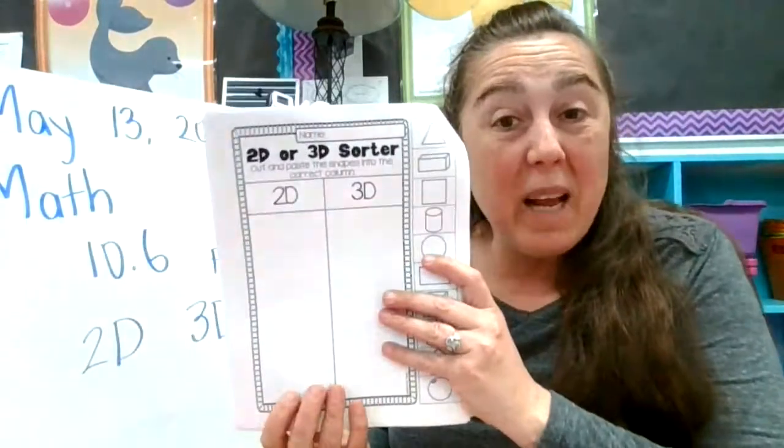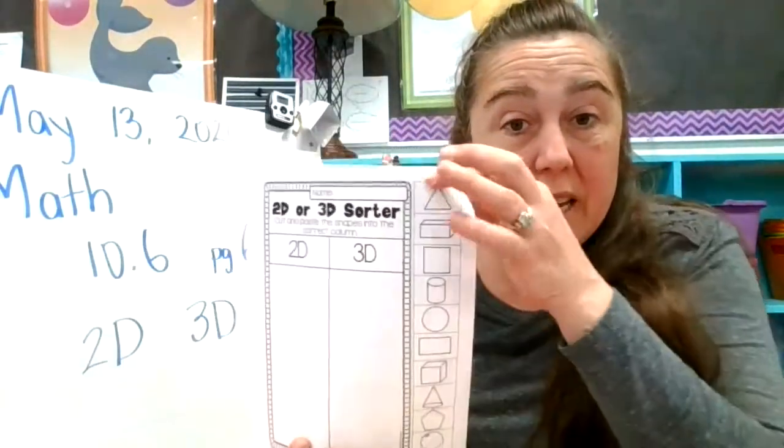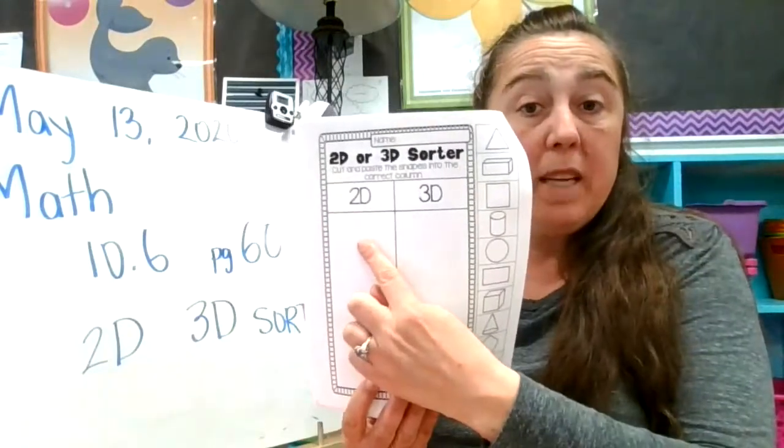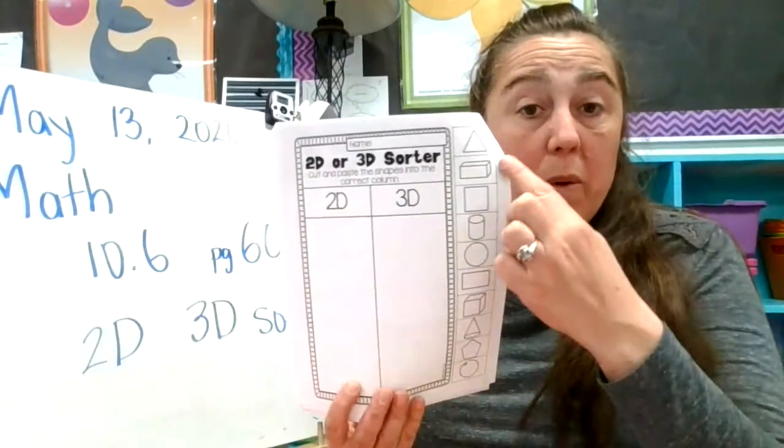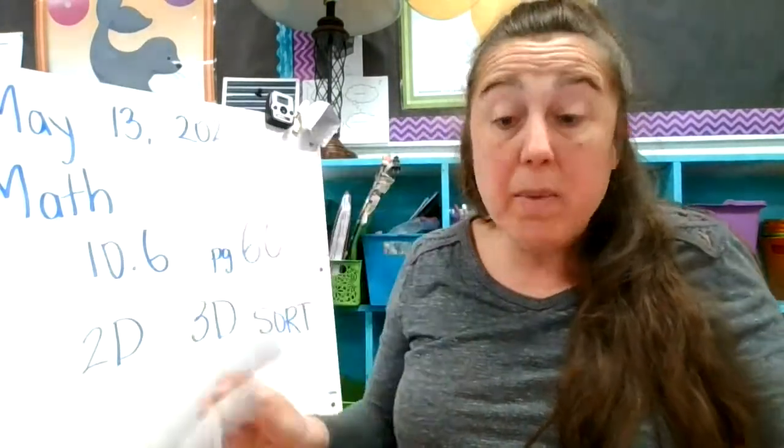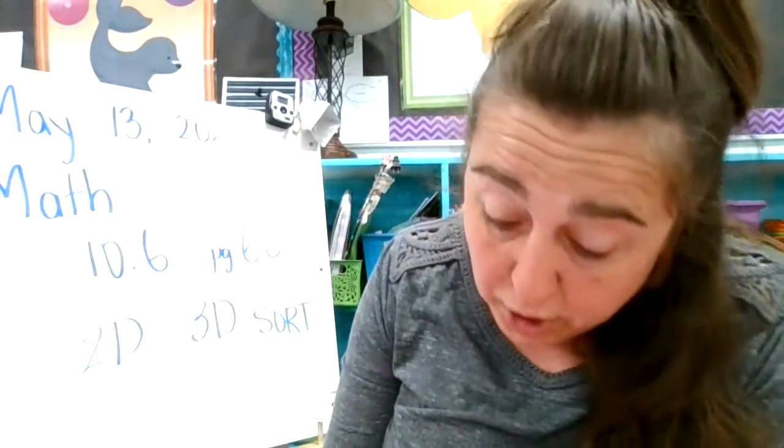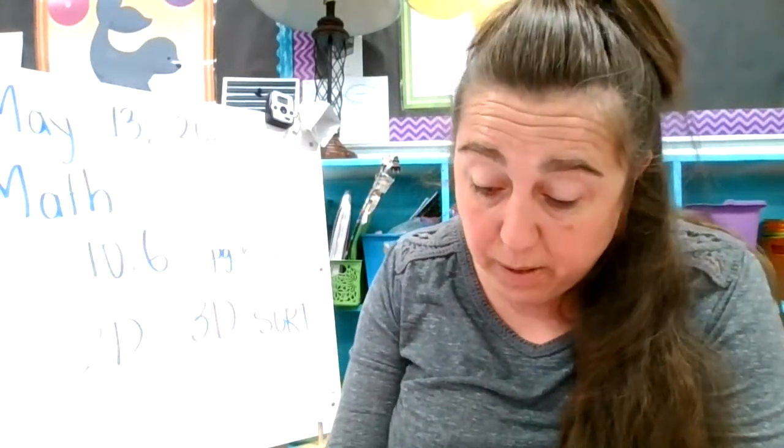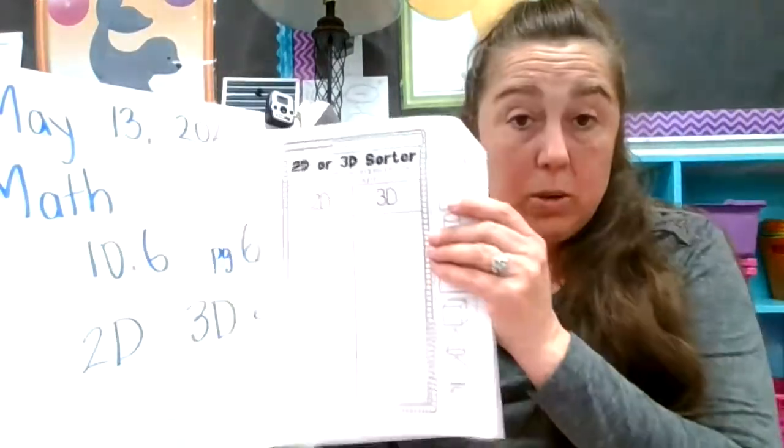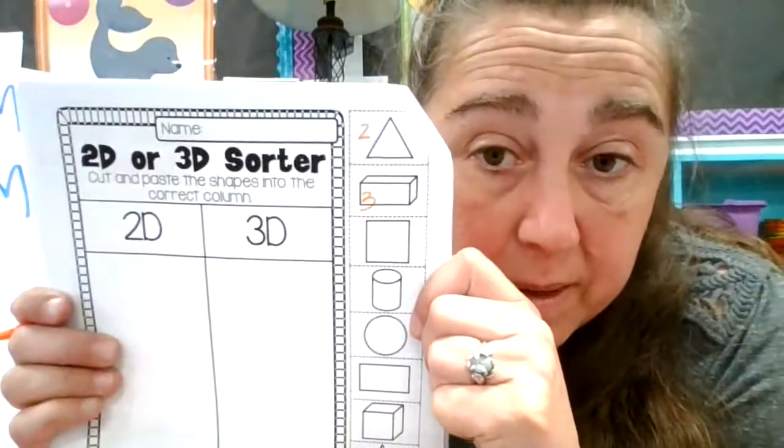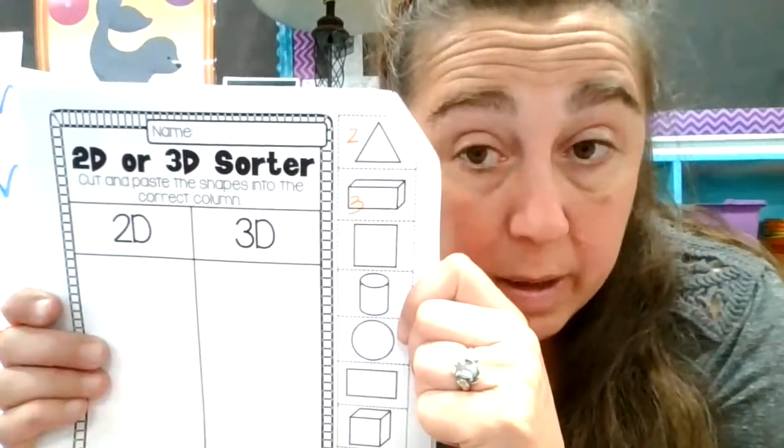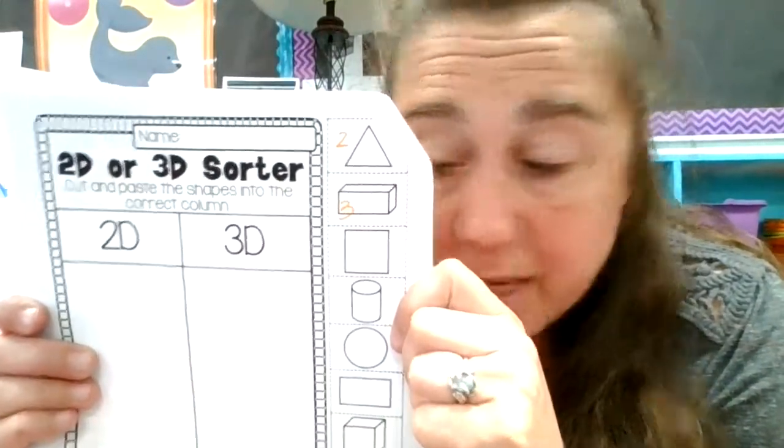So in this one, what I want you to do is get out your green packet today, cut out all these shapes, and do a sort. Are they two-dimensional or 2D or three-dimensional 3D? Something that I would do just to get my brain ready would be to write a 2 if I thought it was two-dimensional and a 3 if I thought it was three-dimensional and then have somebody check it like that. It's your call, though. You can just cut them out and glue them too, and send them in to me so that I can see how you're doing with this.